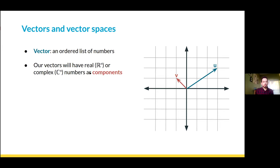When you think about vectors as an ordered list of numbers, our vectors will have real or complex numbers as their components. These constituent numbers, the entries in the vectors, are what we call components of the vector. For the most part, we'll be talking about vectors with real components, but sometimes complex components. We can also think about vectors graphically — we can think about them as these ordered lists, or as an arrow in space with a direction and a magnitude.